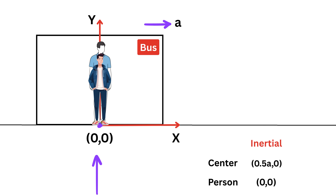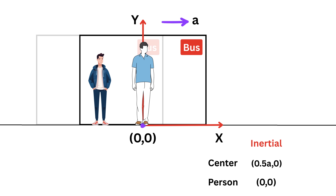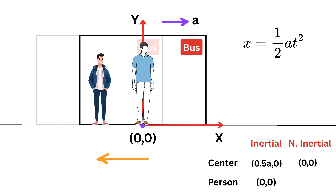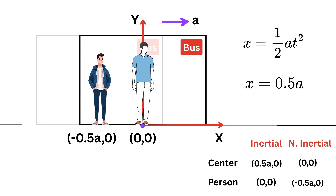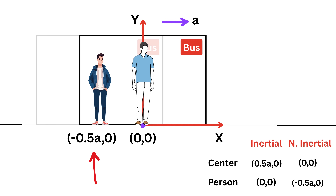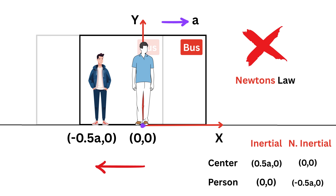We again start with both the person and the center of the bus at coordinate x = 0, y = 0. But now, since I have tied the axes to the bus, when the bus accelerates my axes also accelerate. After one second, the bus center still appears at x = 0. But when I look at the person from inside the bus, it feels like the person moved backward. Using x = ½at², the person's position appears to be at x = −0.5a. So from inside the bus, the center is at x = 0 and the person is at x = −0.5a — it looks like the person moved backwards.